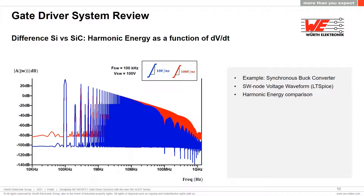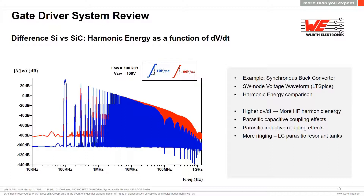Here we can see the frequency spectrum of a square waveform with 100 V amplitude and 100 kHz switching frequency as a function of the rate of rise of voltage when switching — in blue for a dV/dt of 10 V/ns and in red for 100 V/ns, obtained with an LTspice simulation. For higher switching speed there is more energy in the high frequency harmonics, leading to much easier parasitic coupling effects with resulting common mode displacement currents. LC parasitic resonant tanks in the PCB layout and component packages will be excited with more energy, generating more ringing.